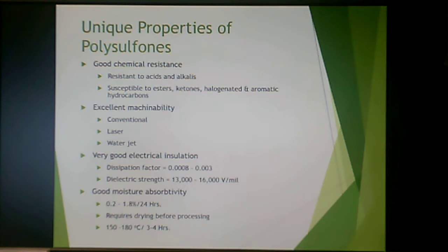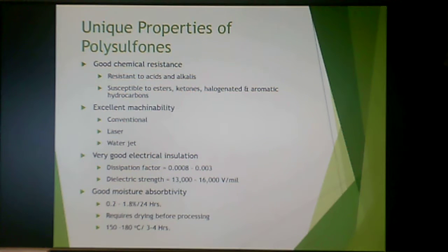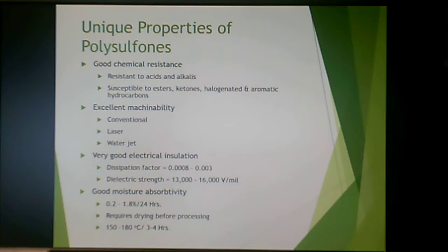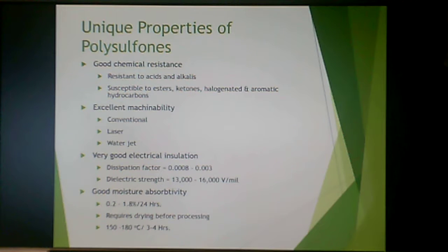Polysulfone has very good resistance to acid and alkali; however, it is susceptible to esters, ketones, and halogenated and aromatic hydrocarbons. It can be machined by conventional methods, laser, or water jet. It has very good electrical insulating properties — only use it if you need those properties. It has good moisture absorption but does require drying before processing, as the oxygens and sulfurs in the structure tend to attract moisture.